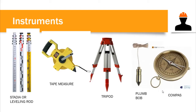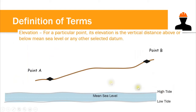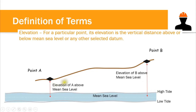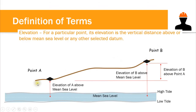In conducting leveling you will encounter important terms. Elevation is the vertical distance above or below mean sea level, or any selected datum. Mean sea level is the average height between high tide and low tide. We can also use any point on the ground as our datum — for example, the elevation of point B above point A is simply the difference in elevation between them.